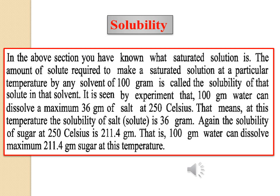Now I would like to discuss solubility. Solubility is the amount of solute that can be dissolved by 100 grams of any solvent at a constant temperature. For example, if the solubility of sodium hydroxide (NaOH) is 26 at 25°C, that means at 25°C, 100 grams of water can dissolve 26 grams of sodium hydroxide.